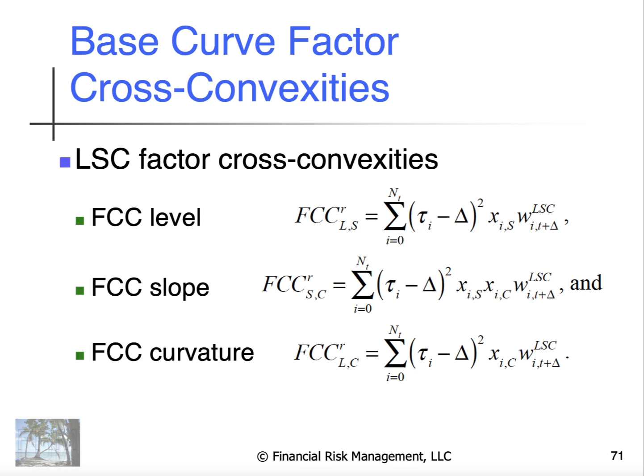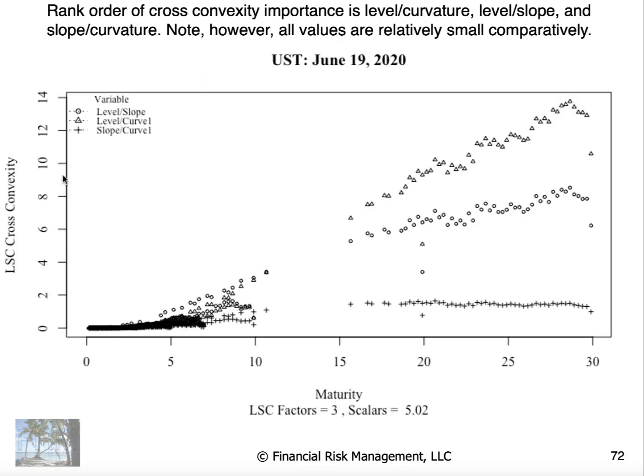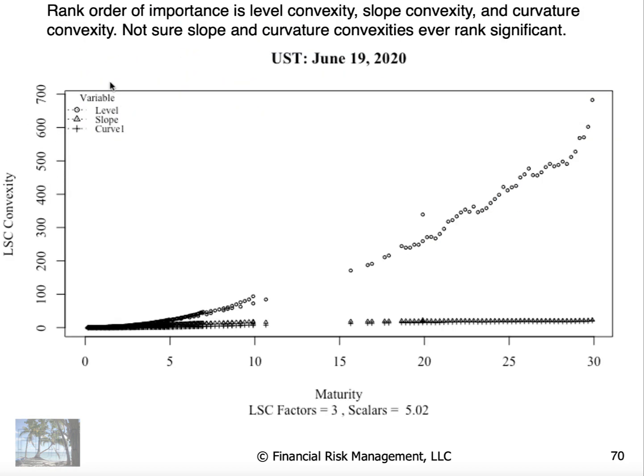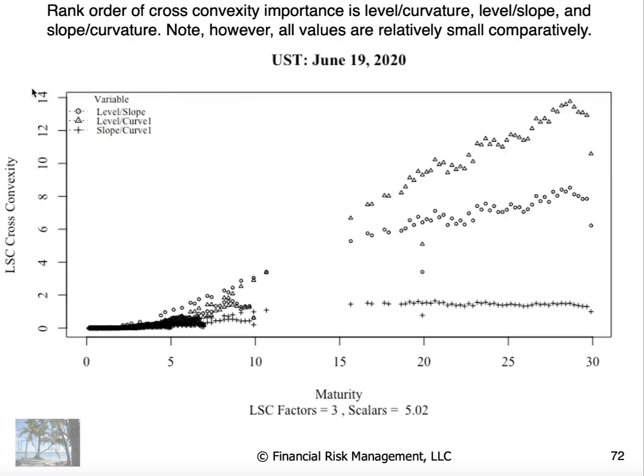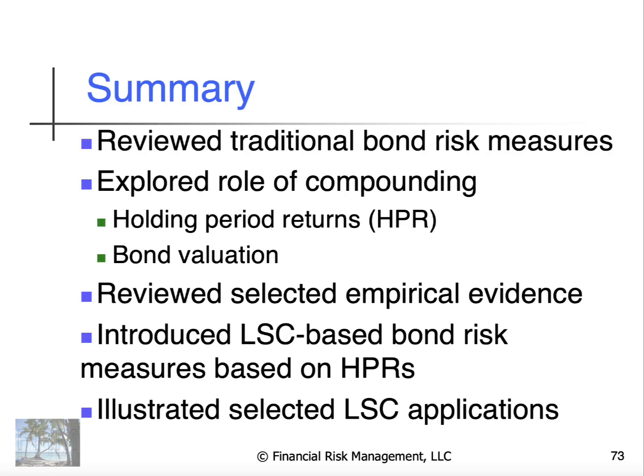With cross-convexities, when we run this analysis, if you'll notice that these numbers are in the range of 0 to 700, with cross-convexities, it's 0 to 14. So, basically, these just don't matter that much.